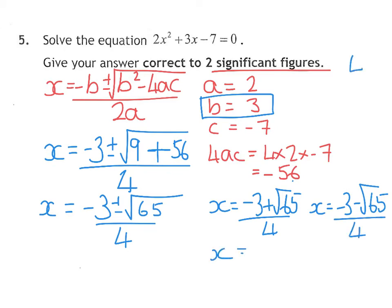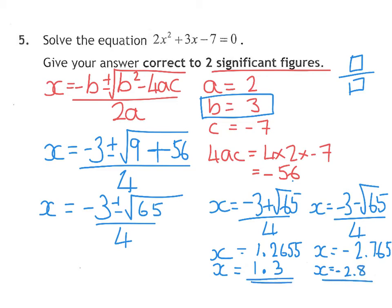We then split this into two sums. X equals minus 3 add your square root, and X equals minus 3 minus your square root. If you have the calculator with the fraction button, just type it in exactly as it appears. Make sure you press equals after the top line. You do not work out what the square root of 65 is and round it. The first one gives you 1.2655, and the second one gives you negative 2.765. To 2 sig fig, that's 1.3 and negative 2.8.